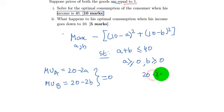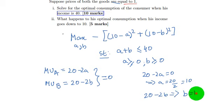Therefore 20 minus 2A is equal to 0, or A is equal to 20 by 2 which comes to 10. Similarly 20 minus 2B gives us B is equal to 10.